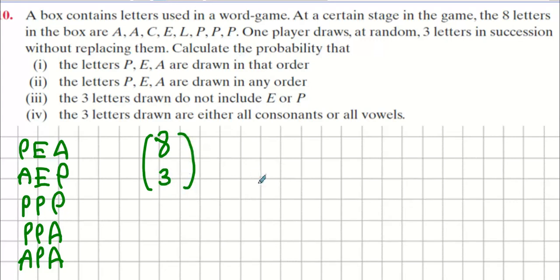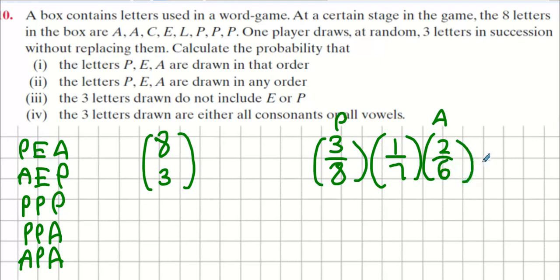If we use the fraction format here to get PEA in that order, three out of eight chance of grabbing a P on the first go, what about the second go for the E? One over seven. There's one E and we lost the letter, so it's one over seven. And then the A? Two over six. And what does that answer come out to? One over fifty-six.